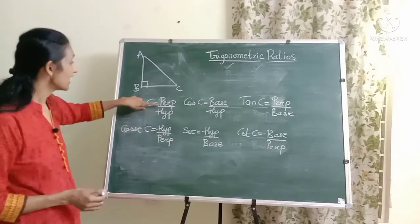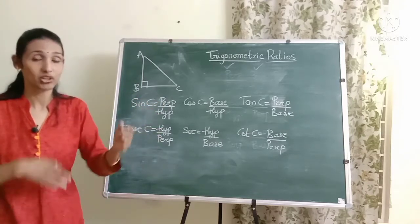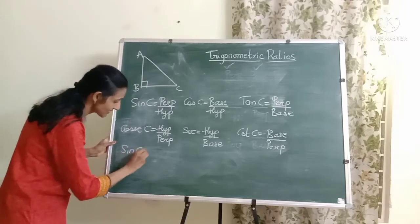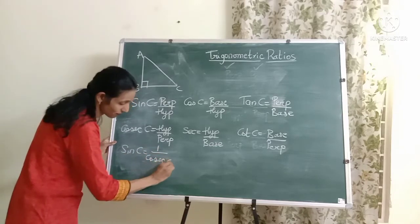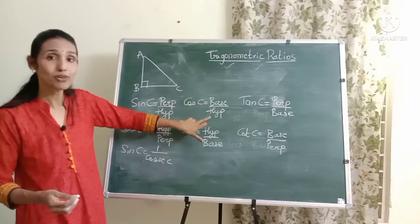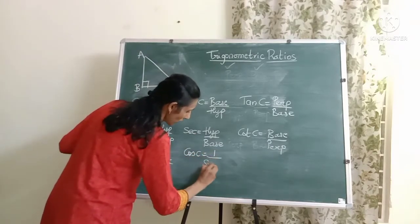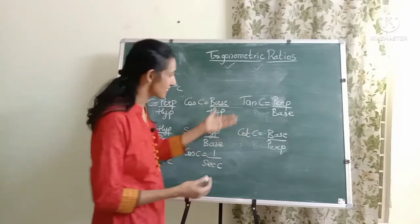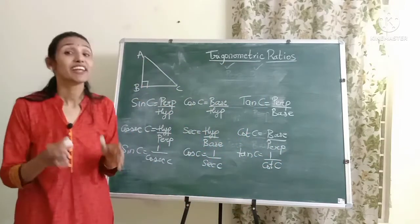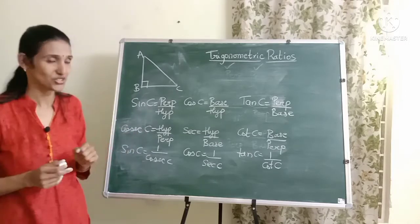An important observation: sine is perpendicular upon hypotenuse and cosec is hypotenuse upon perpendicular, so they are reciprocals of each other — sin C = 1 / cosec C. Similarly, cos C = 1 / sec C, and tan C = 1 / cot C. These reciprocal relationships are very important.